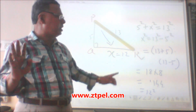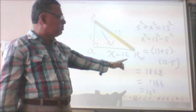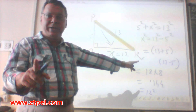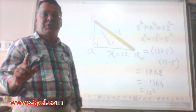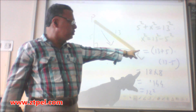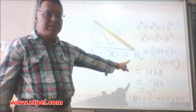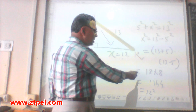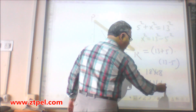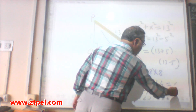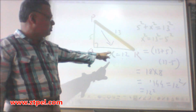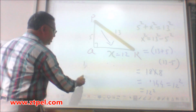We will use the powerful identity A plus B into A minus B equals A square minus B square, so X square is written as 13 plus 5 into 13 minus 5, which becomes 18 into 8, that is equal to 144, which equals 12 square. So the base QR is equal to 12. This is a very powerful application of the Pythagoras theorem.